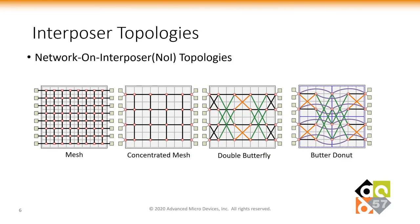Several approaches to build a network on interposer, or NOI, topology have been discussed in previous academic works. A simple topology connects a core-level router to an interposer router forming a mesh, but this design consumes large area and most links are left underutilized. A natural alternative is a concentrated mesh network where multiple cores connect to a router in the interposer. Double Butterfly takes advantage of longer links to reduce average hop count and diagonal links increase bisection bandwidth. Butter Donut increases bisection bandwidth while keeping router complexity similar to CMesh by utilizing misaligned interposer routers.